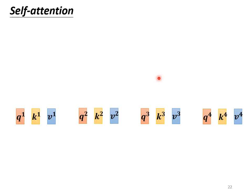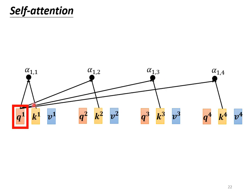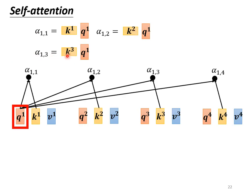In the next step, we take the inner product of every q and every k to calculate the attention score. Multiplying q1 by the transpose of k1 is the same as taking their inner product, giving α1,1. Similarly, α1,2 is the inner product of q1 and k2, α1,3 is the inner product of q1 and k3, and α1,4 is the inner product of q1 and k4.